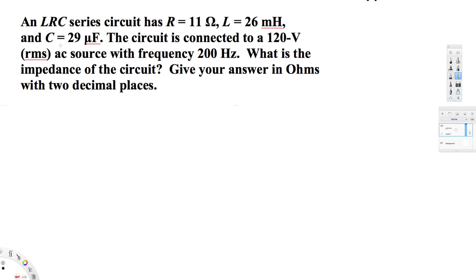Let's look at this problem. This question is asking: an LRC series circuit has R equal to 11 ohms, L equal to 26 millihenries, and C equal to 29 microfarads. The circuit is connected to a 120 voltage RMS AC source with frequency 200 hertz. What is the impedance of the circuit?